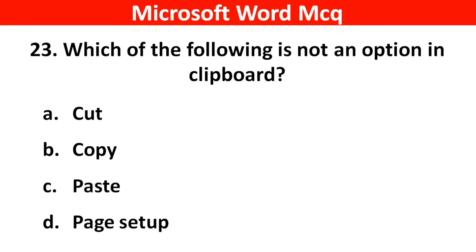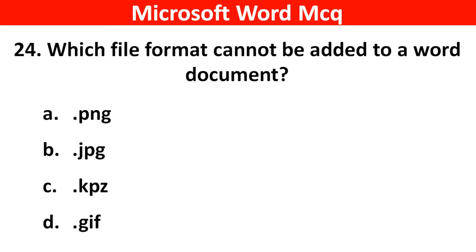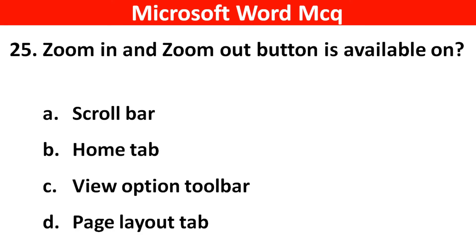Next question: Which of the following is not an option in clipboard? Right answer is Option D: Page Setup. Next question: Which file format cannot be added to a Word document? Next question: Zoom in and zoom out button is available on? Right answer is Option C: View Options Toolbar.